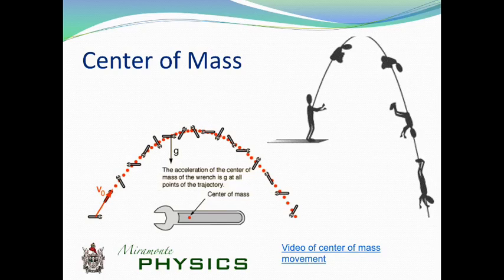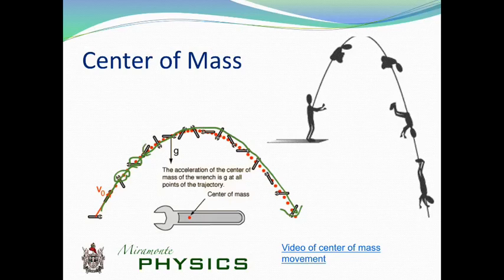Now if you were to throw a wrench, you're going to see that the trajectory of the object itself is going to follow a parabolic trajectory. But the wrench, as it's flying through the air, is going to be rotating around and around its center of mass.